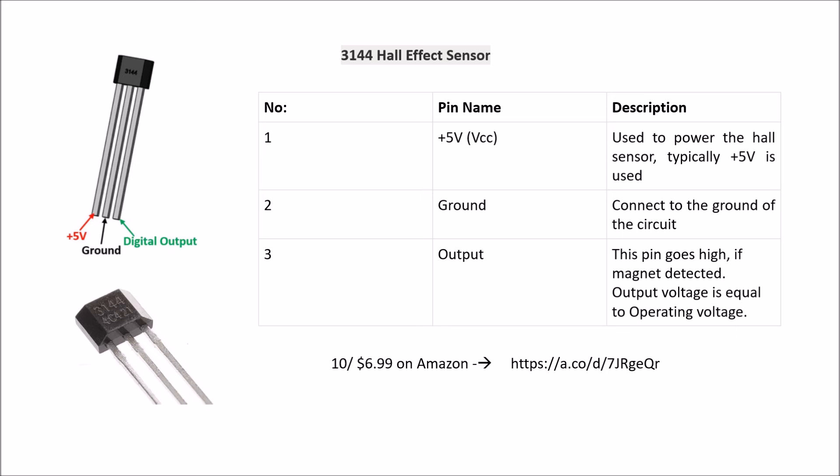The 5-volt pin actually can be anywhere from 5 to maybe as high as 24 volts, but 5 volts is the normal recommended power for it. Pin number 2 is ground, and number 3 is the output, either high or low. It goes high if a magnet is detected. It goes low if there's no magnet detected.